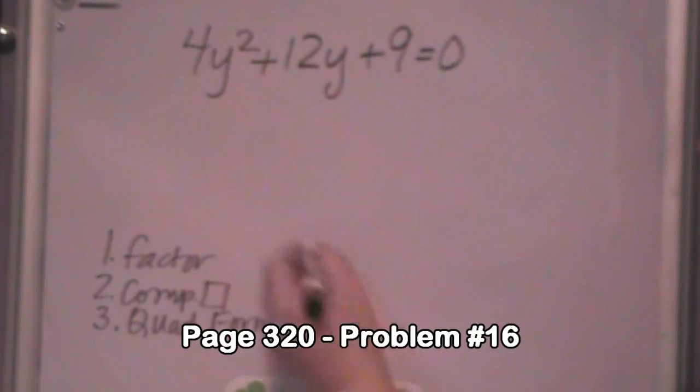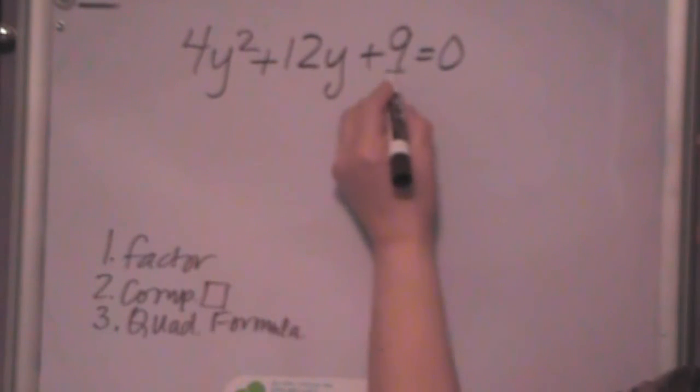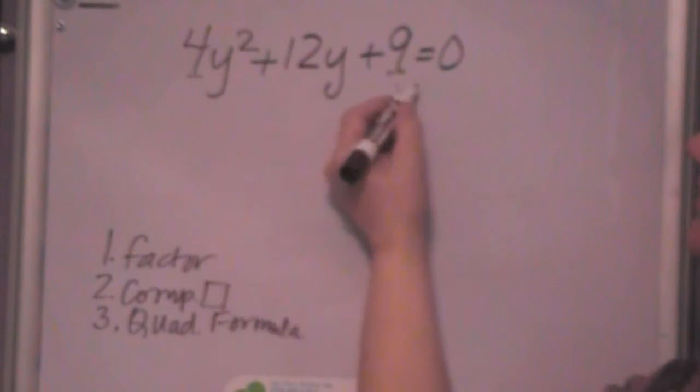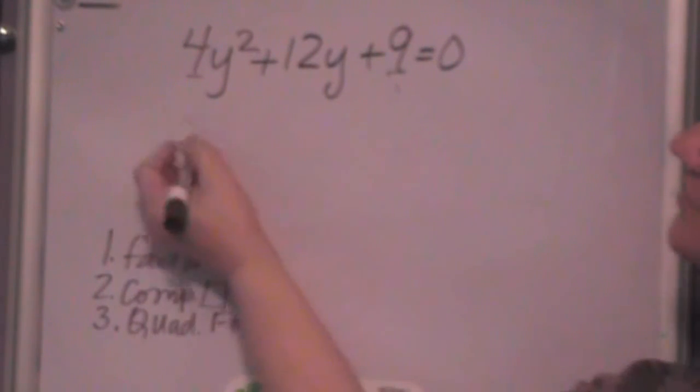You might not like to factor something like this with a leading coefficient. This one does factor quite easily though because you have to recognize that if I had 3 times 3 is 9, and this would be 2y times 2y. So 2 times 3 gives me 6 and when I do that twice I get 12. So it does factor very easily and I can show you that.